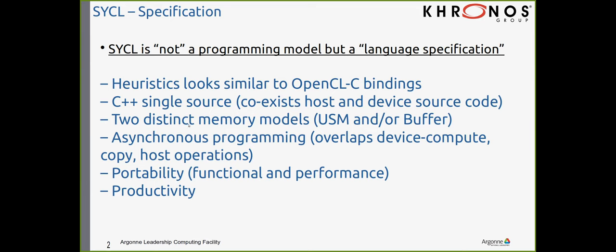There is a memory model in SYCL that includes both USM and a buffer model. One offers a lot more control over memory transfers; the other handles that job for you — that's the stark difference. Like any other GPGPU programming model such as CUDA, HIP, or OpenCL, SYCL carries an asynchronous programming model where you overlap compute, copy, and host operations to maximize performance and reduce time to solution.